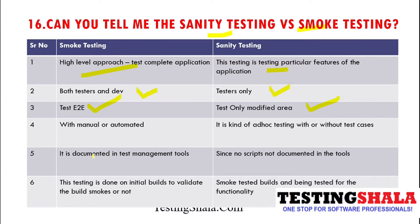Smoke testing can be done both manually and with automation tools. Sanity testing is more of an ad hoc testing done without formal test scripts. We use the test management tool to document test cases in sanity testing, but most of the time we do not have any test cases or scripts, so there is no chance of documenting them.